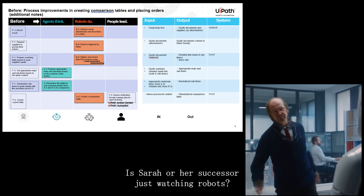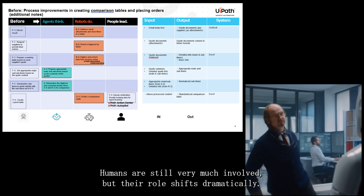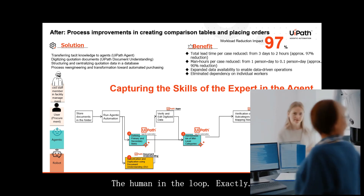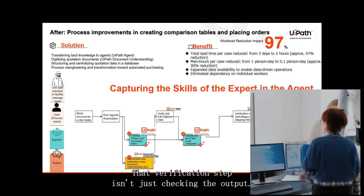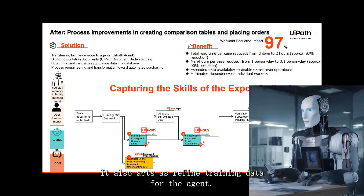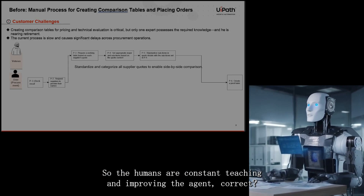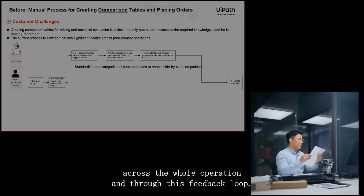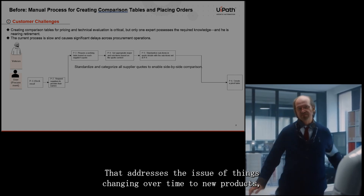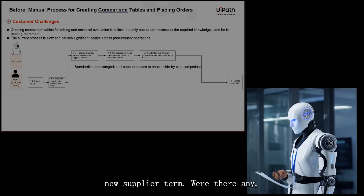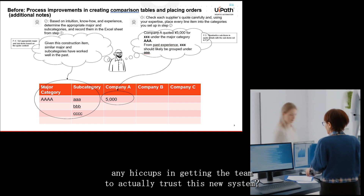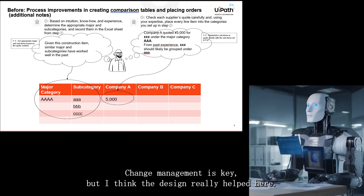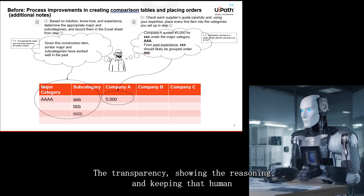Humans are still very much involved, but their role shifts dramatically. The final comparison table goes to a human for verification — human in the loop. But that verification step isn't just checking the output; it also acts as refined training data for the agent. The humans are constantly teaching and improving the agent, meaning Sarah's knowledge isn't just captured once — it's continuously refined, updated, and scaled across the whole operation through this feedback loop. Change management is key, but the transparency and human verification step built trust.